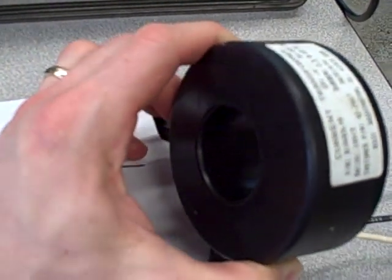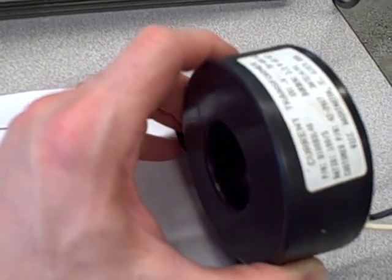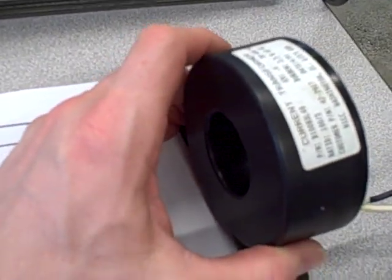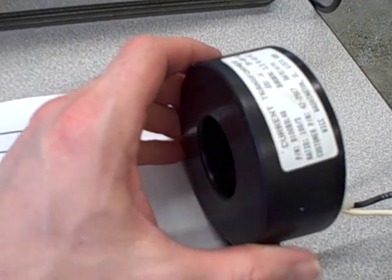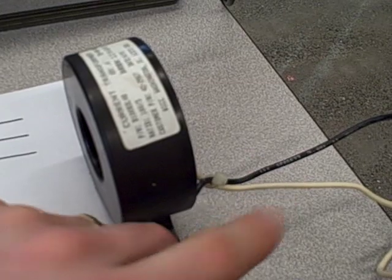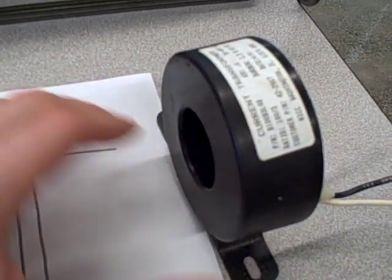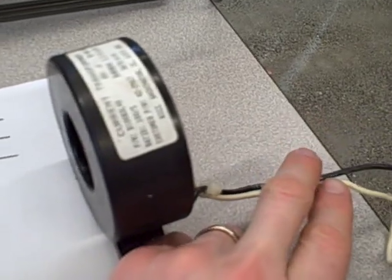You can purchase these in all kinds of different ratios: 50 to 5, 100 to 5, 300 to 5, 600 to 5. Those are some of the common ratios you'll see. The idea is this not only steps down the current of the high voltage and high current conductor down to something more reasonable, but it also electrically isolates the high voltage conductor from the measurement circuit.